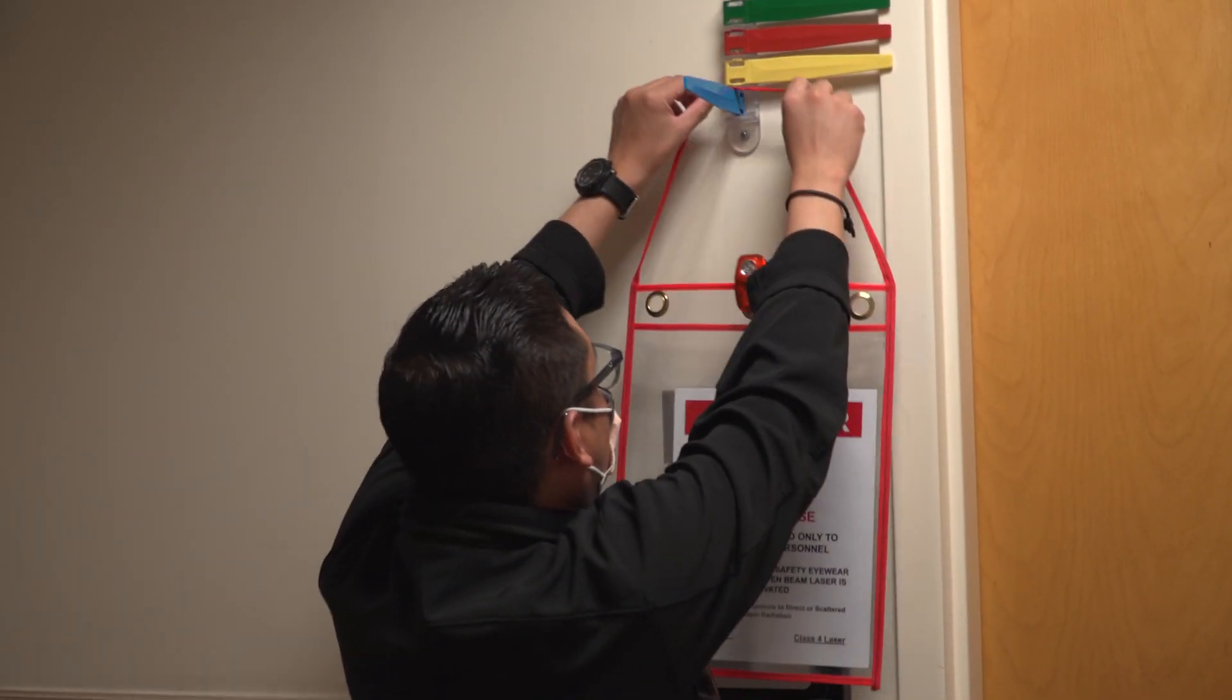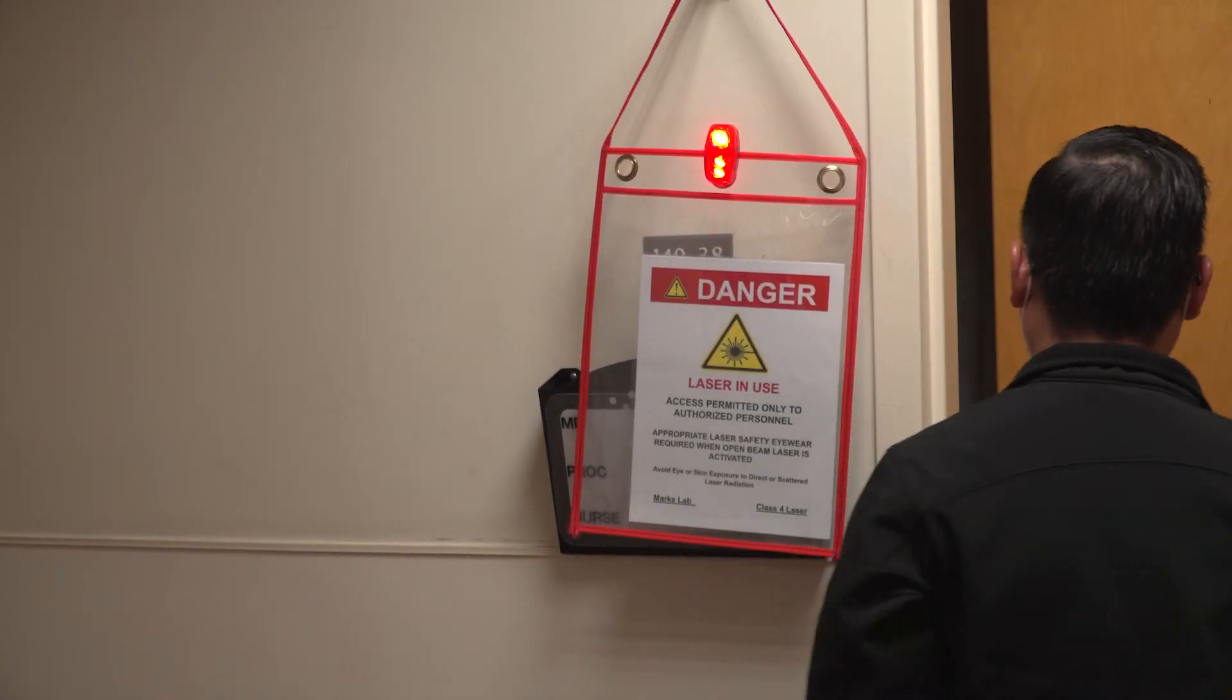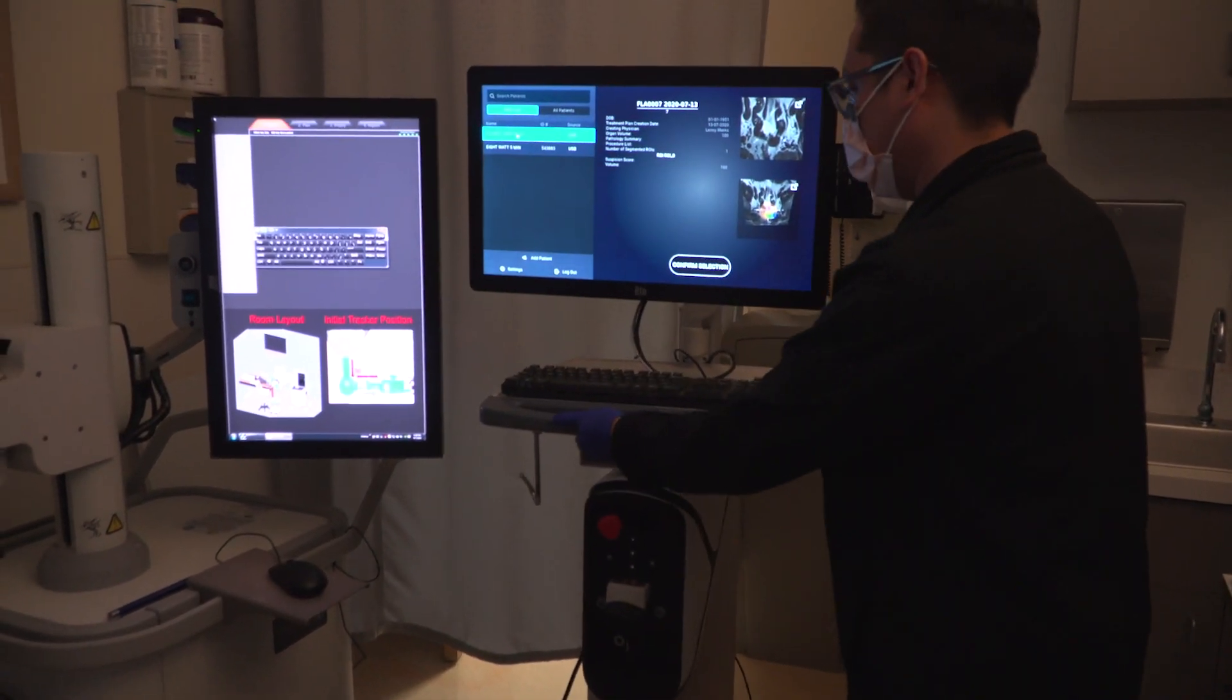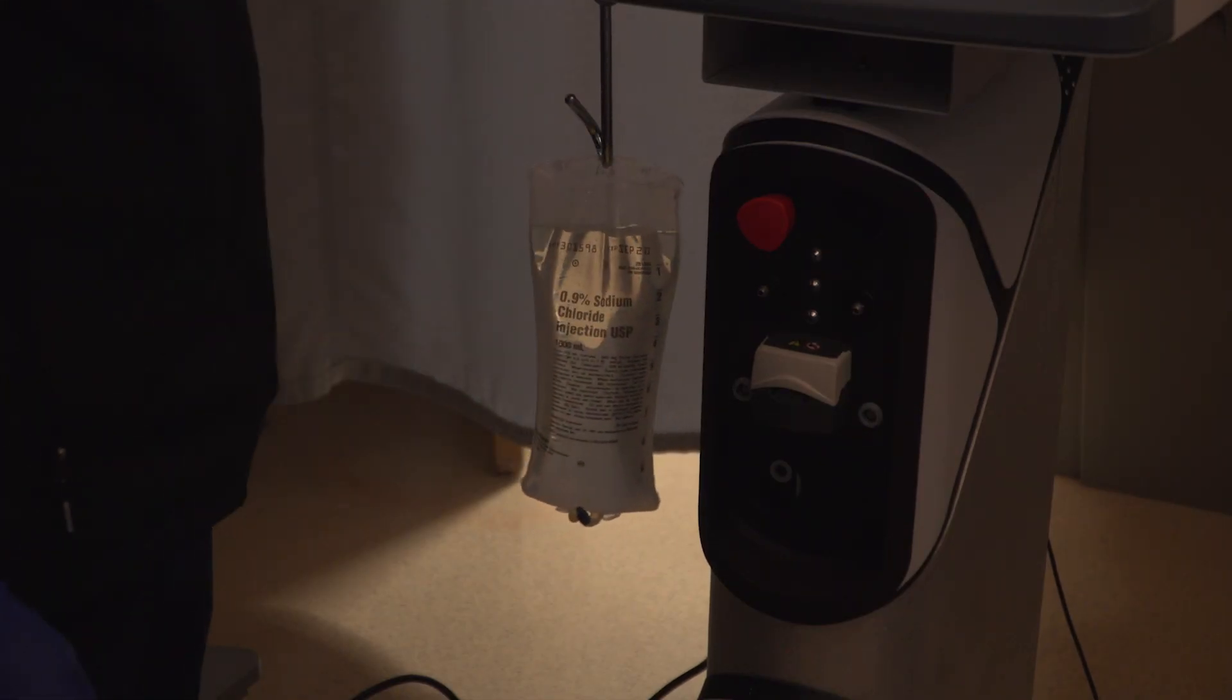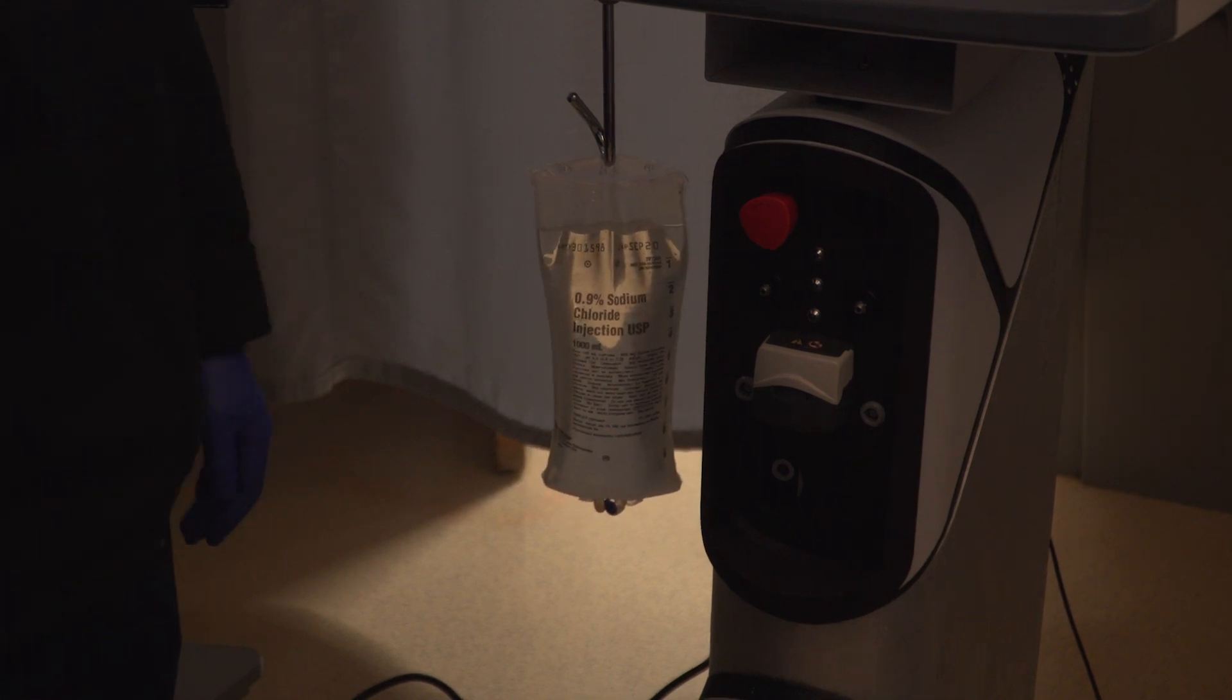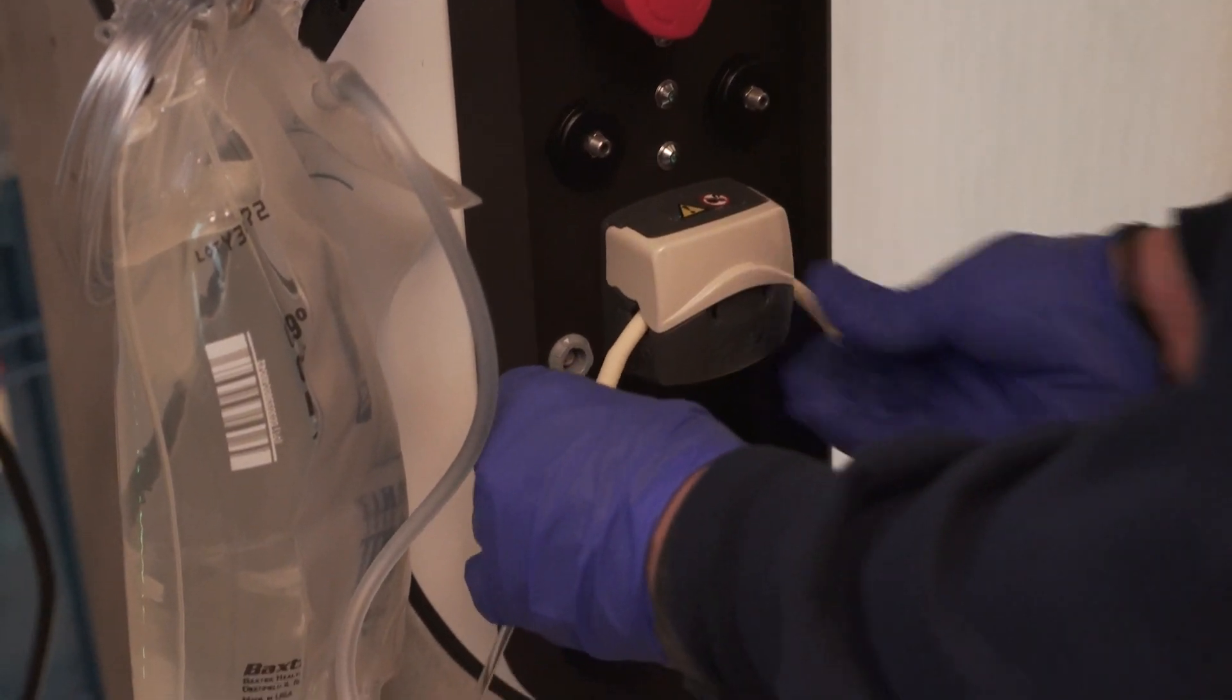In preparation for the procedure, place a laser warning sign outside of the room and minimize all non-essential traffic. While setting up the room, the Orion workstation is placed where it can be comfortably accessed. An IV bag of saline and a drainage bag are attached to the Orion workstation to facilitate later cooling of the laser fiber during ablation. The IV tubing is passed through the pump on the front of the workstation and coiled for later use.